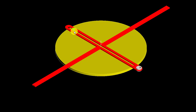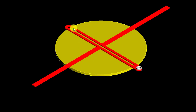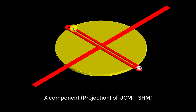We have a slotted link engaging with the pin, and it is going to filter out one component of the pin's motion. As the pin moves, its y-component — its motion along that direction — will not affect the slotted link at all, because the pin just slides through the slot. But if the pin moves in the x-direction, the slotted link will be dragged with it. So out of the x and y components of the pin's uniform circular motion, we are filtering out only the x-component, which is simple harmonic motion.